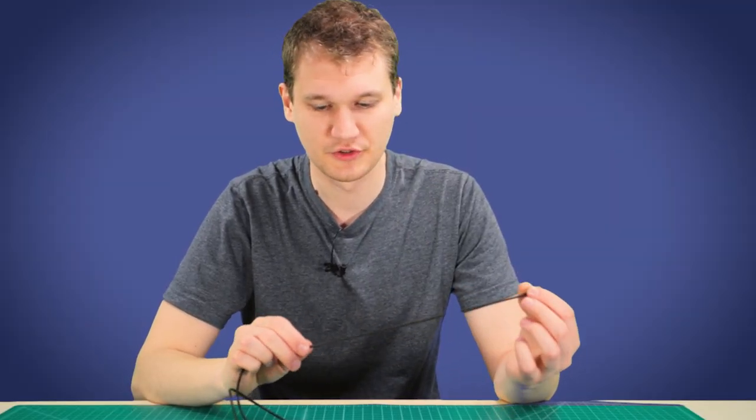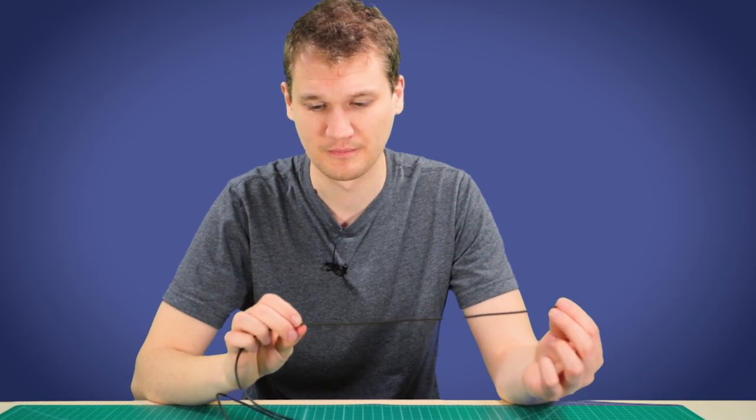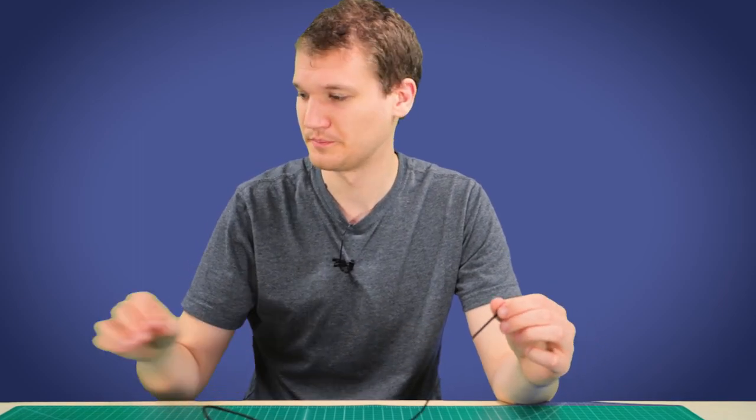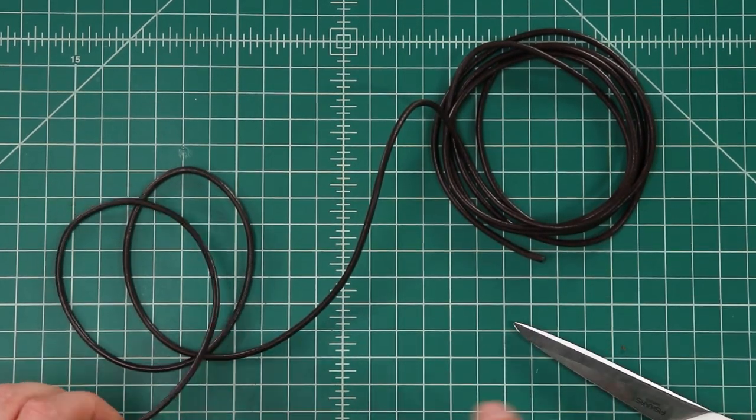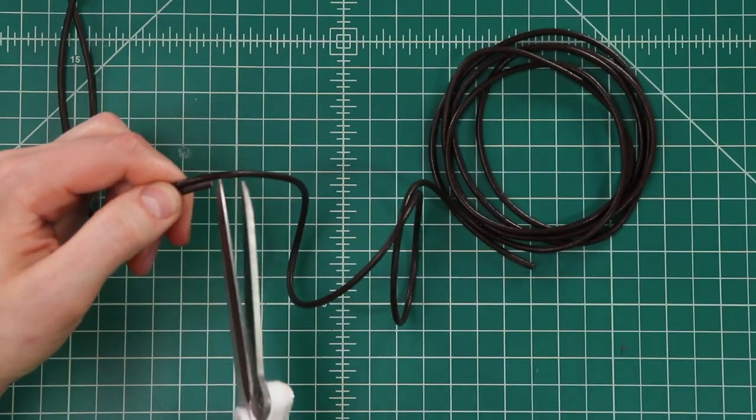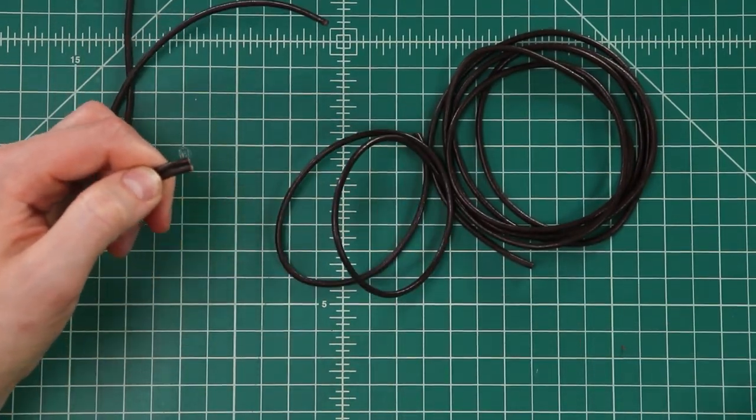Alright, so to start off we just want to cut two foot long lengths of our leather cord. If you have a large wrist you might want to just leave a couple inches extra. So two feet total. You can just set the rest aside.